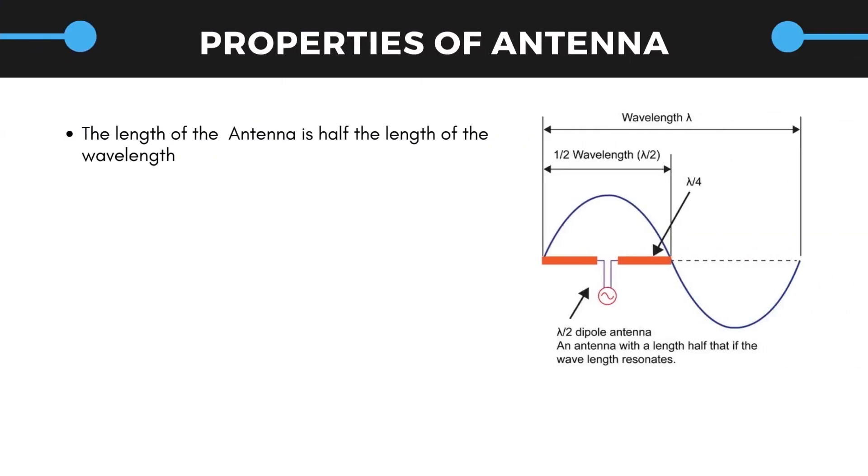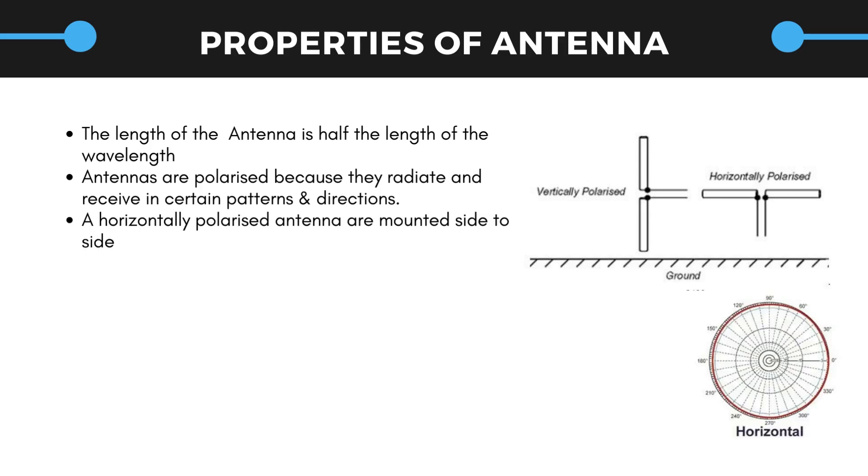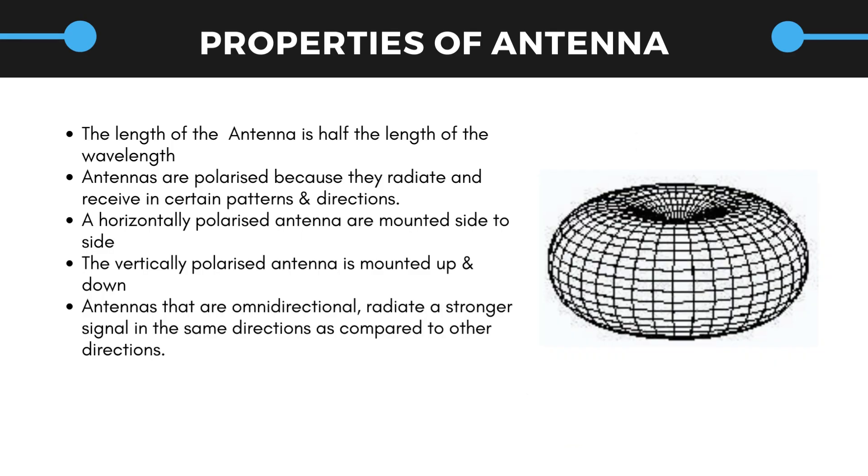The length of the antenna is half the length of the wavelength of the frequency. Antennas are polarized because they radiate and receive in certain patterns and directions. A horizontally polarized antenna is mounted side to side and they radiate in a donut like field, whereas the vertically polarized antenna is mounted up and down and they radiate in all directions. Therefore, antennas that are omnidirectional radiate a stronger signal in the same directions as compared to other antenna. This property is known as antenna signal directivity, i.e. receiving antennas with the same polarity as transmitting antennas generate a stronger signal.